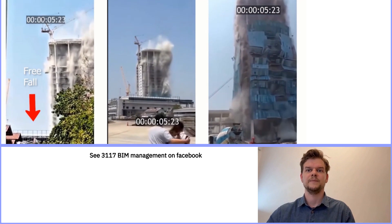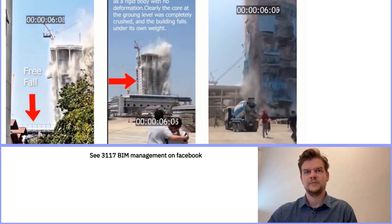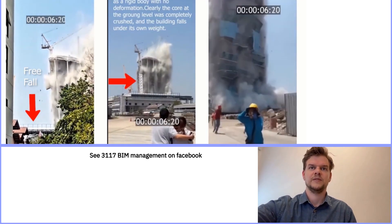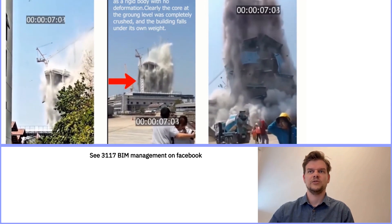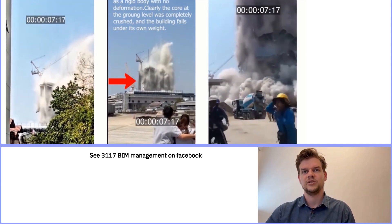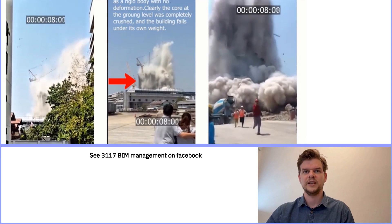So what do we see? Biggest movement at the top, but the structure fails lower down. At the moment the column breaks, the core fails too, and then the entire structure comes down. This is what's called a pancake collapse.